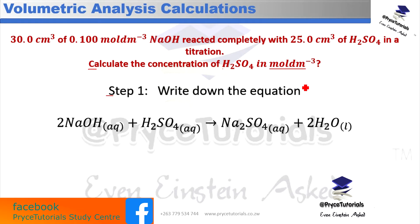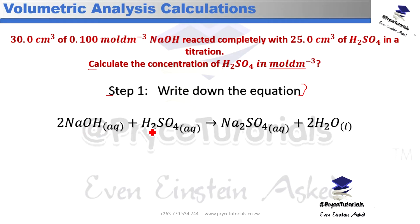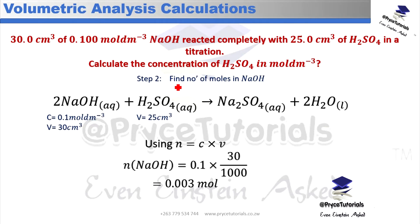The first step is to write and balance the equation. We have two sodium hydroxide molecules reacting with one H₂SO₄, and this gives us one sodium sulfate and two H₂O.